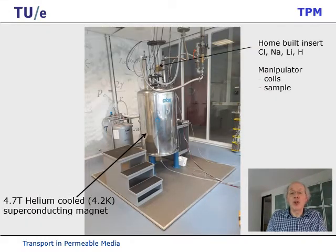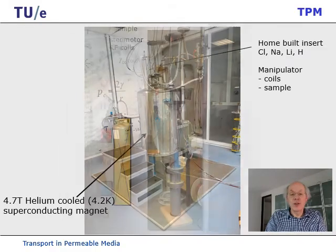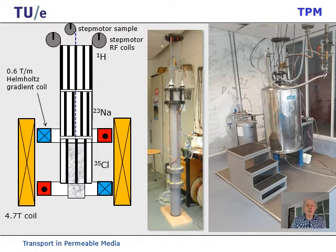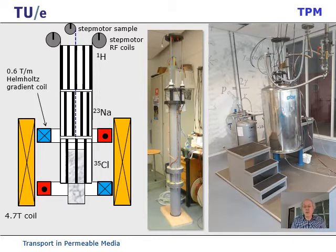How does such a setup look? It's essentially a vessel with a superconducting magnet — quite boring in itself. Inside, here is the sample and here are the coils. What we can do in this setup is move the coils up and down, thereby selecting for measuring only chloride or only hydrogen. We can also move the sample up and down. In other words, we can measure profiles for sodium, chloride, and hydrogen for every sample as a function of position.